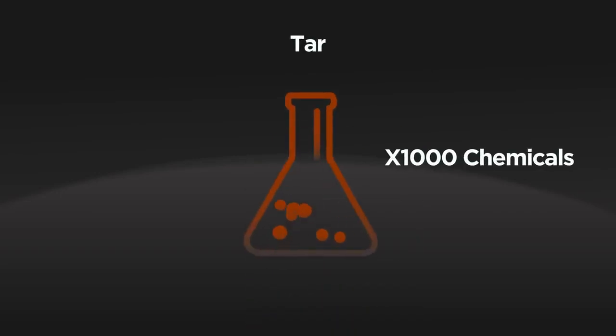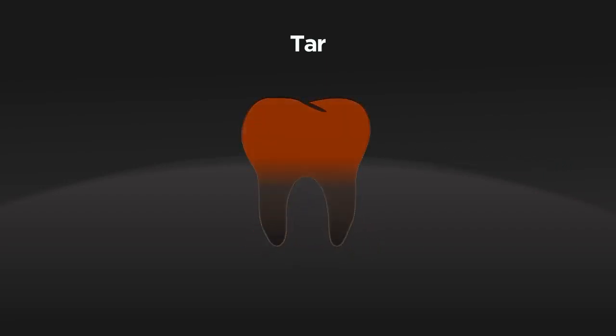Tar contains over a thousand chemicals. It forms a tacky brown or yellow residue, which is why sometimes smokers have stained teeth. And if you could see them, stained lungs too.